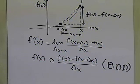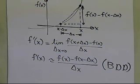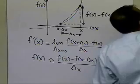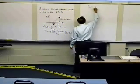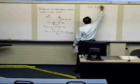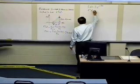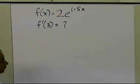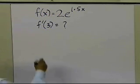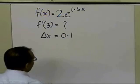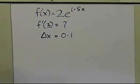Let's take the same example and see what kind of numbers we get for the approximate derivative of the function. The example is f of x equal to 2 e to the power 1.5x. We want to calculate the value of the derivative of the function at 3. We're going to choose delta x equal to 0.1, which is either given or would be your choice.